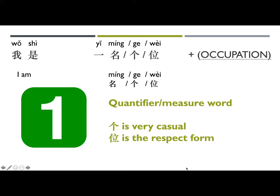The difference between the three quantifiers: 个 is very casual and the most common quantifier in Chinese — you can use it to quantify apples, people, and many everyday items. 位 is the respectful form when quantifying people; you use 位 when referring to clients or customers. 名 is another quantifier for people, typically used when describing occupations like student, teacher, or police officer. If you don't know which to use, 个 is always safe.